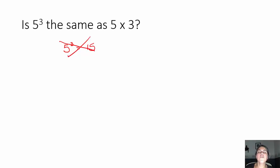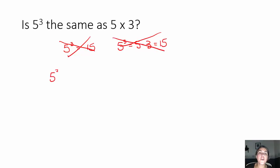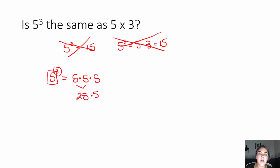It's certainly not. 5 to the third means 5 times 5 times 5. The 3 tells you how many times to multiply the base by itself. Let's work this out: 5 times 5 is 25, times 5 is 125. So 5 to the third power equals 125.